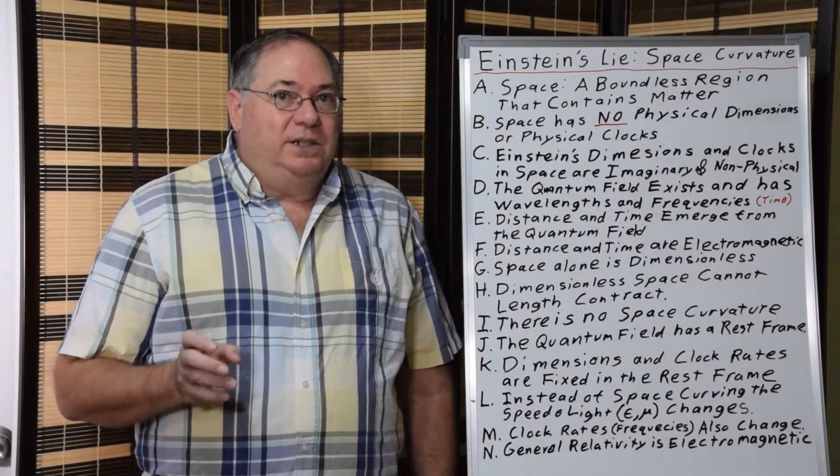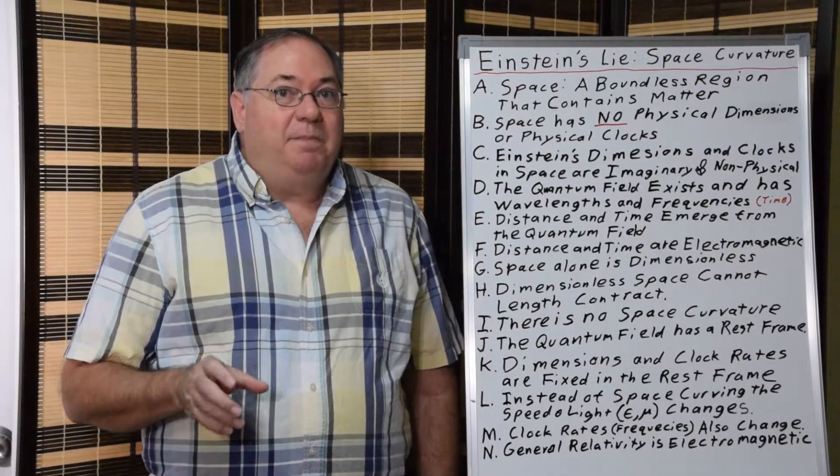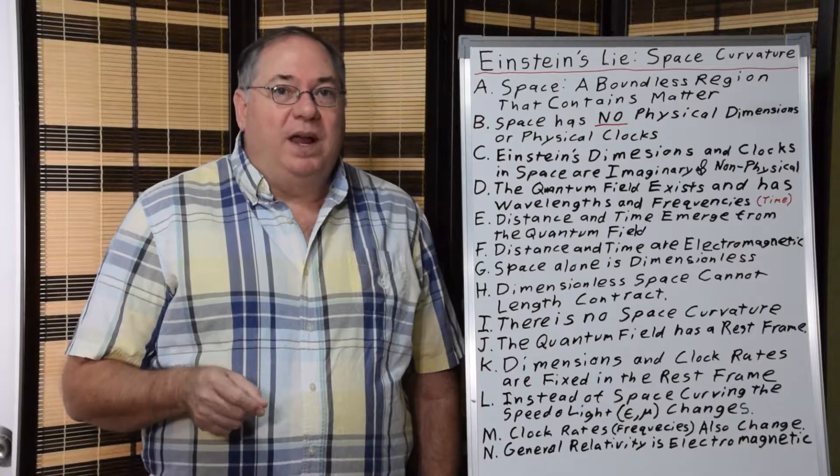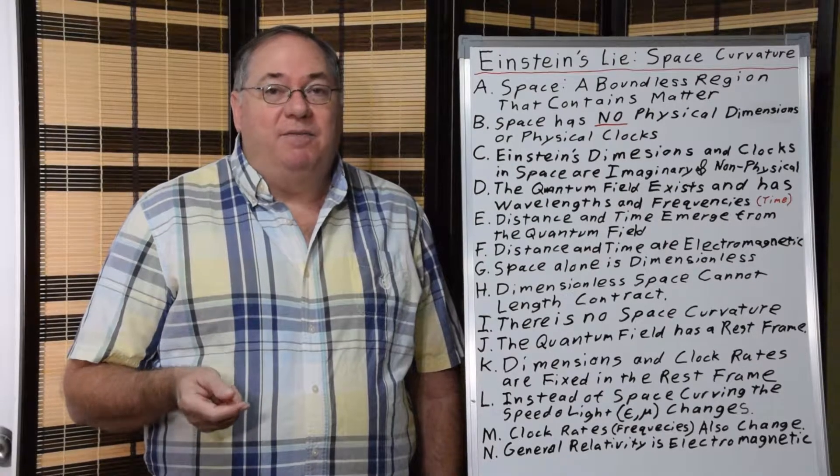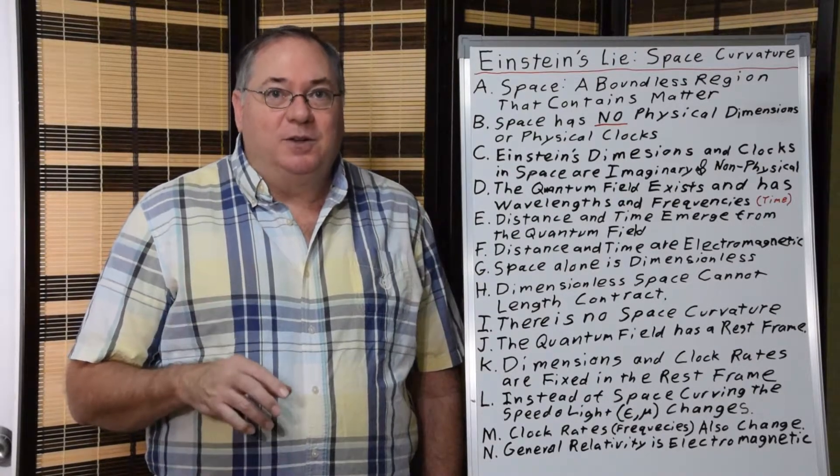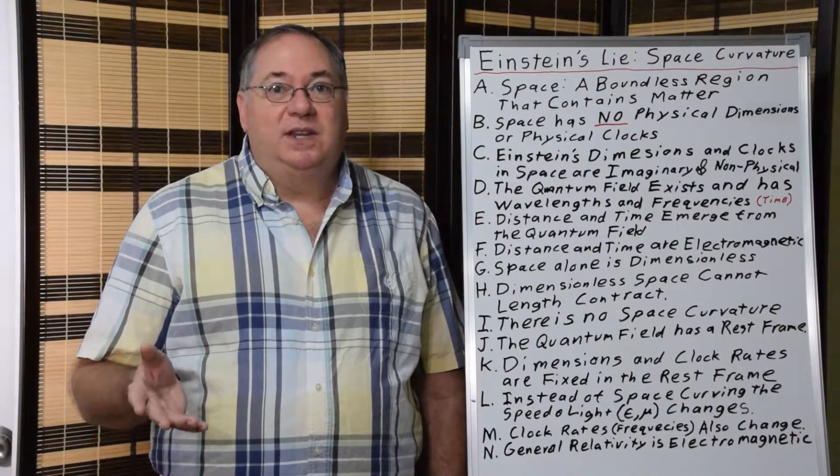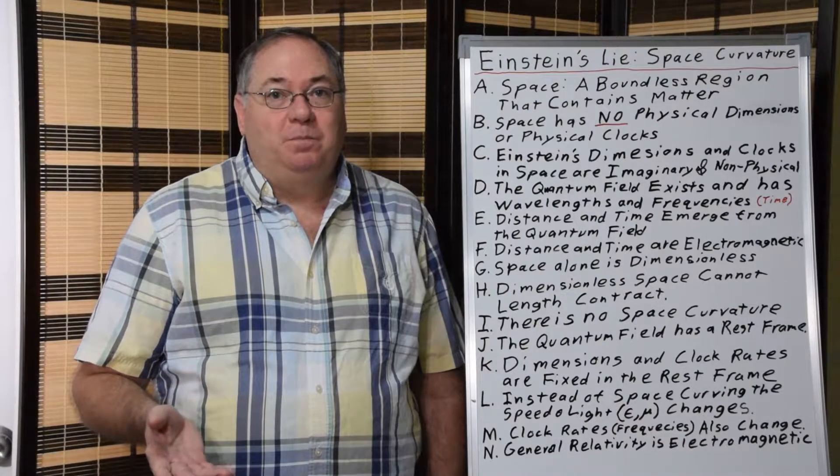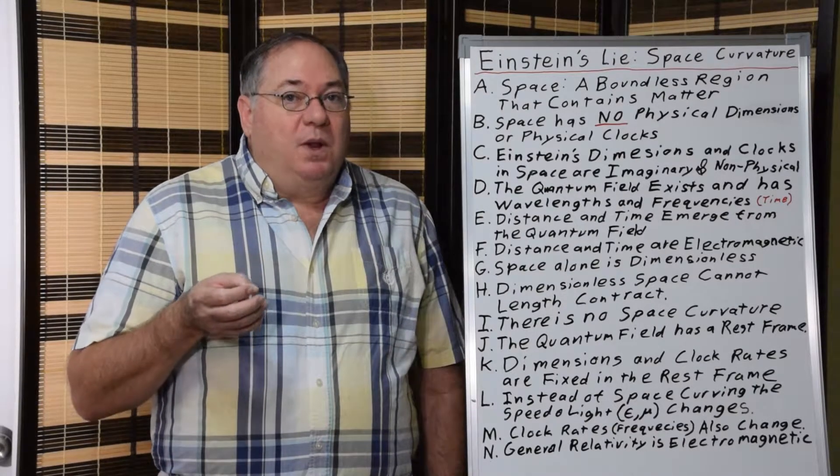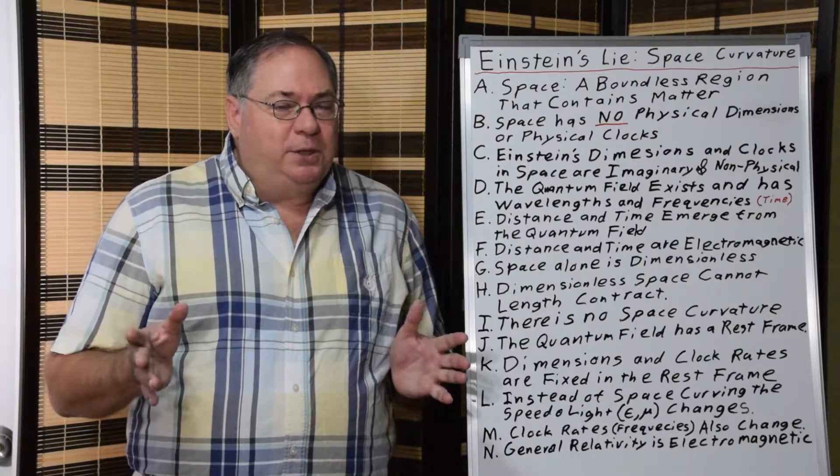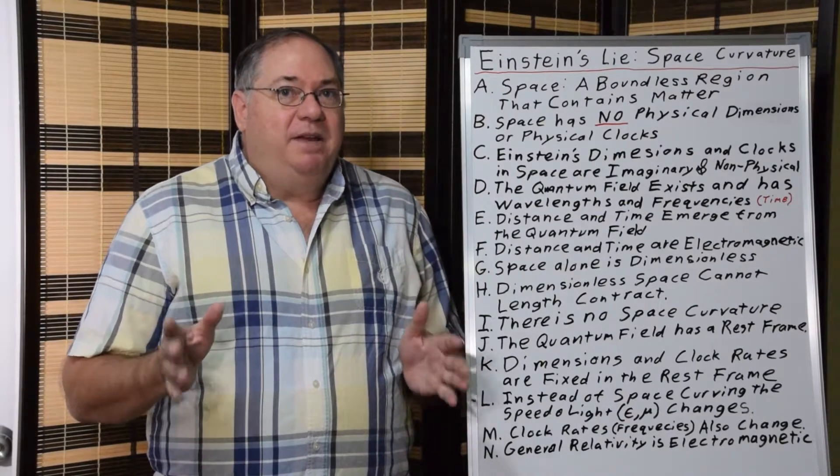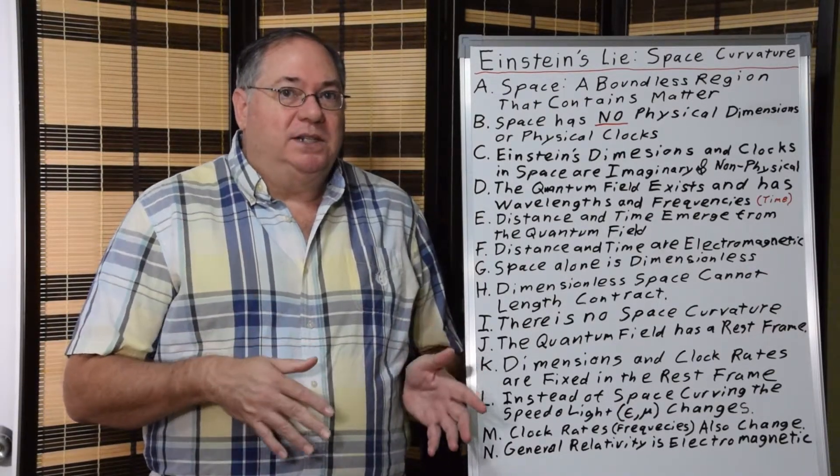The quantum fluctuations that make up the quantum field have wavelengths and frequencies. And frequencies is in cycles per second. So, by having frequencies, it means that the quantum fluctuations have a property of time. So, the quantum field, just by itself in space, gives space physical dimensions and time.